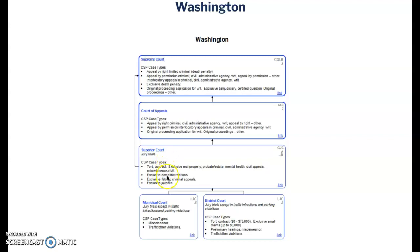Superior courts in the state of Washington handle felony matters — burglary, homicide, and so forth — domestic relations, so obviously family court, and exclusive juvenile jurisdiction, meaning in Washington this court hears all matters involving juveniles. That means they have subject matter jurisdiction over juvenile cases, so if you were a juvenile, your case would not be heard in district court or municipal court because they do not have jurisdiction.